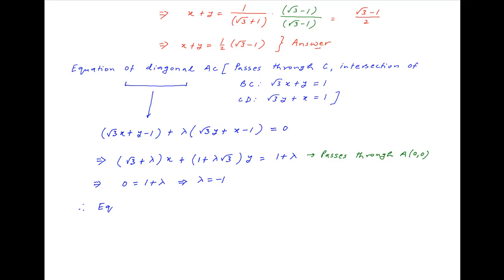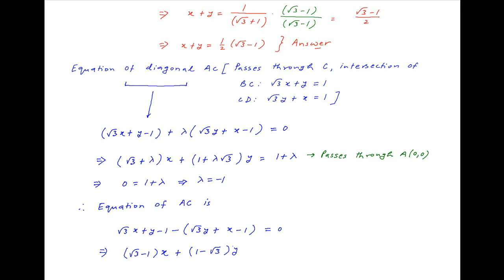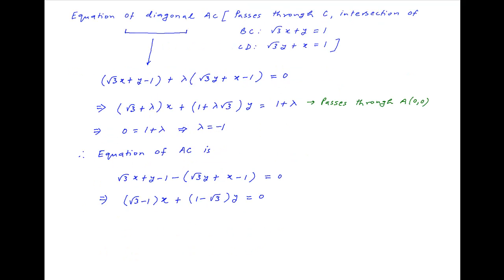Substituting λ = −1 into the equation of diagonal AC, we get (√3x + y − 1) − (√3y + x − 1) = 0, which implies (√3 − 1)x + (1 − √3)y = 0. The factor (√3 − 1) cancels, and this simplifies to x − y = 0, which means x = y is the equation of diagonal AC.